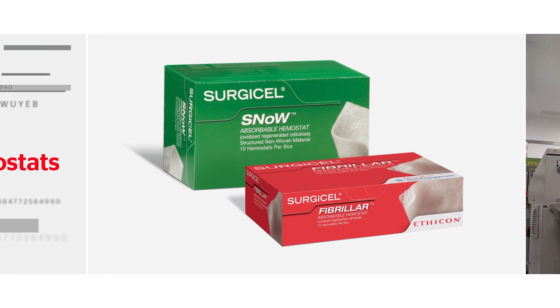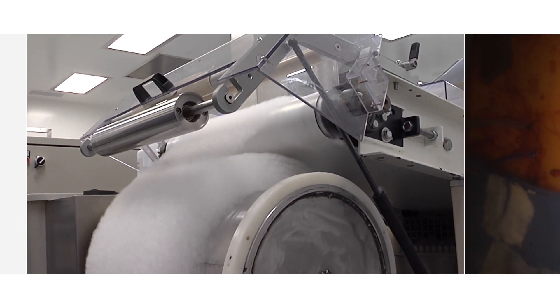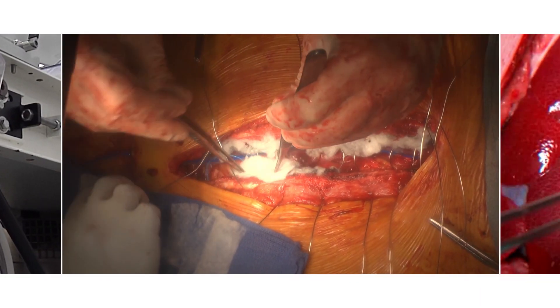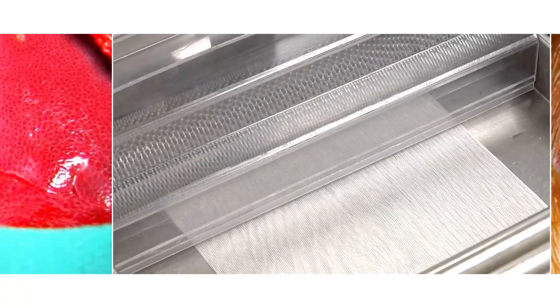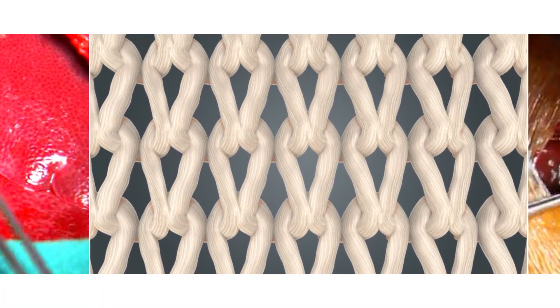Surgicel Snow and Surgicel Fibrilar are specially processed to increase hemostatic capacity and improve handling compared to Surgicel Original. First, Surgicel Original is broken down into individual ORC fibers.